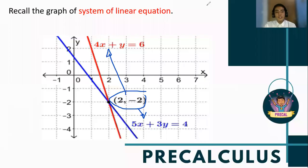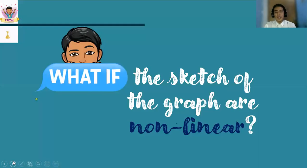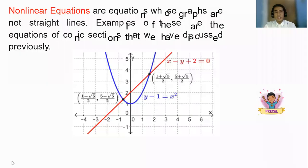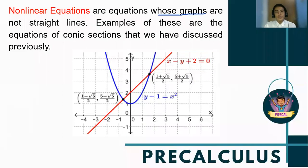So again, when we say system, it talks about two or more lines in the graph. But what if the sketch of the graph is non-linear, meaning they are curves just like the conics? Non-linear equations are equations whose graphs are not straight lines. Examples of this are equations of conic sections.